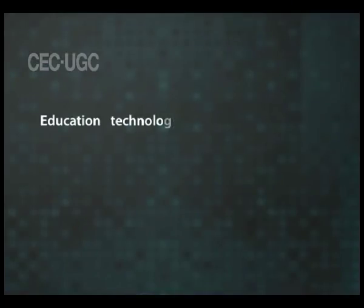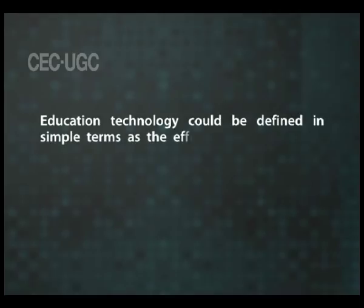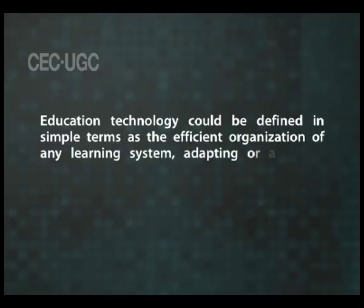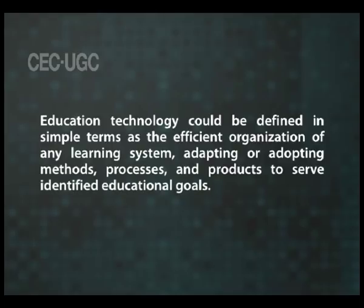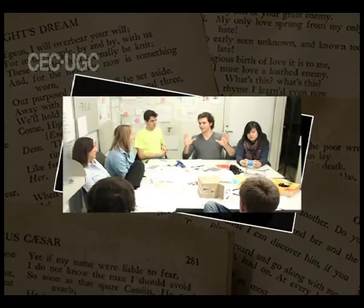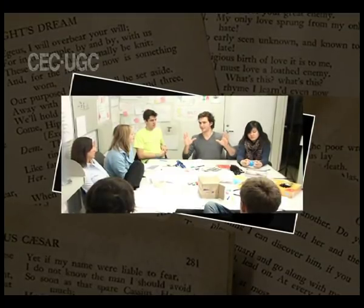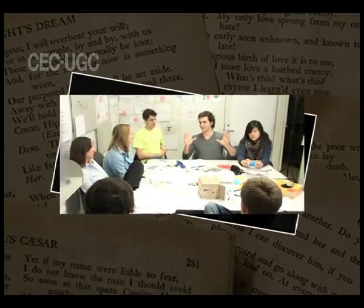Education technology could be defined in simple terms as the efficient organization of any learning system, adapting or adopting methods, processes, and products to serve identified educational goals. This would involve systematic identification of the goals of education, taking into account nation-wide needs, the system capabilities, and the learners' needs and potential. Recognition of needs means not only to fulfill their immediate needs, but also future needs.